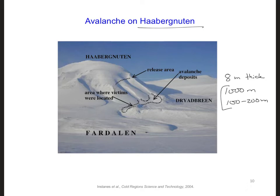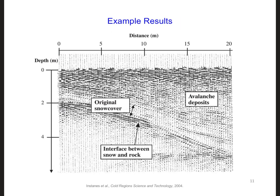Since about 24 hours had already passed at the very beginning of the search, it was clear that it would not be possible to find any avalanche survivors. So the primary mission of the radar system was to test the system and shorten the rescue operation. Here is an example result from the tests. In this figure we can see the surface of the ground, the original snow cover, as well as the avalanche deposits. We can distinguish between the two layers of snow because the electrical characteristics of the original snow cover versus the avalanche deposits are different.